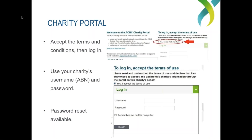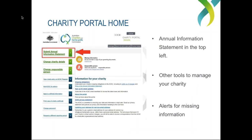Once you've entered those details, you'll be taken to the portal homepage. Once logged in, it's very easy to get to the Annual Information Statement — it's the top left-hand corner link: Submit Annual Information Statement. There is other information within the portal about your charity and its details — this is where you manage the administration of your charity with regard to ACNC obligations. It's worth noting that changing committee or board members is not managed through the Annual Information Statement; you need to do it in the portal before you get into the AIS.